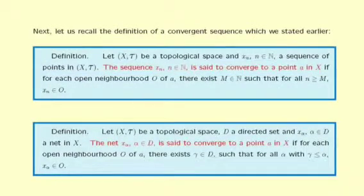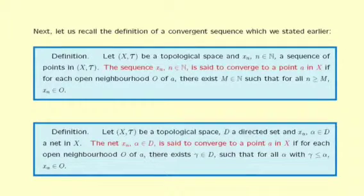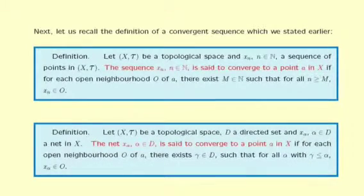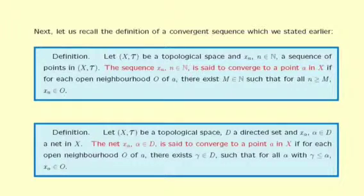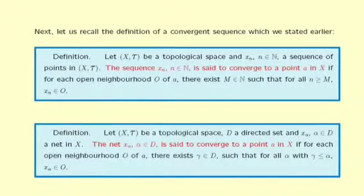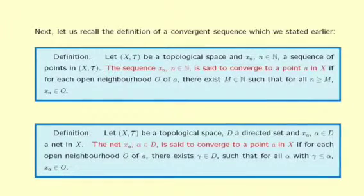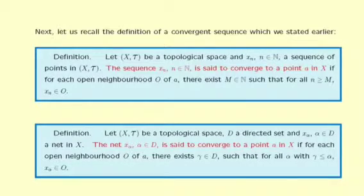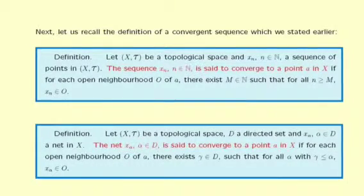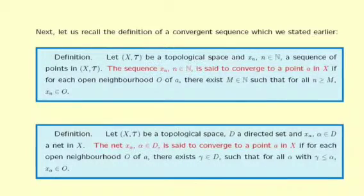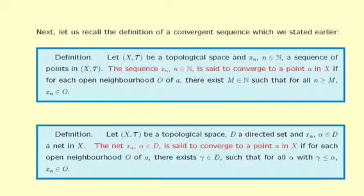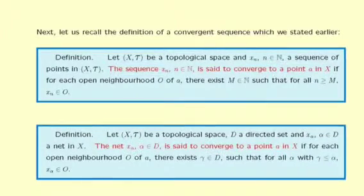Before defining a convergent net, let us recall the definition of a convergent sequence stated earlier. Now let's define convergence of nets. Let X_τ be a topological space, D a directed set, and X_α (α in D) a net in X. The net X_α is said to converge to a point A in X if for each open neighbourhood O of A there exists a γ in D such that for all α ≥ γ, X_α is in O.